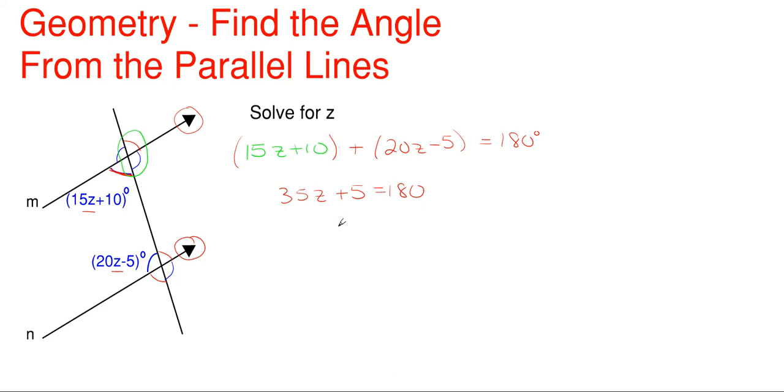So essentially what I have is 35z. If I move this 5 to the other side, I'm going to have 180 minus 5 because I'm moving the 5 to the opposite side. So the sign has to be opposite, algebra right there. So 35z is equal to 175. And then I divide by 35 on each side to get z by itself. And that gives me exactly 5.